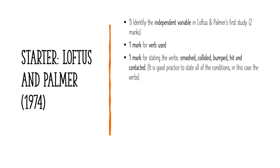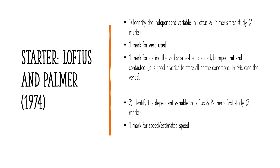Number two: identify the dependent variable — what did they measure? One mark for speed or estimated speed, and the second mark is for operationalizing this variable — stating how you're actually measuring it. Very specifically, they measured it in miles per hour; they took all participants' responses and calculated an average miles per hour response.